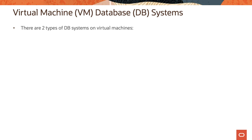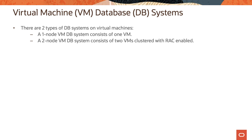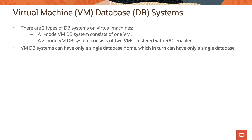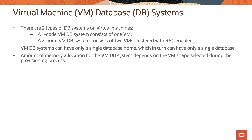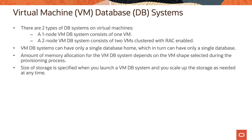Let us now look at the VM database system. There are two types of database systems on virtual machines. The first one is a one-node VMDB system which consists of one virtual machine, and the second one is a two-node VMDB system which consists of two VMs clustered with real application clusters, or RAC, enabled. The VMDB systems can have only a single database home, which in turn can have only a single database. The amount of memory allocation for the VMDB system depends on the VM shape selected during the provisioning process. The size of storage is specified when you launch a VMDB system, and you can scale up the storage as needed at any time.